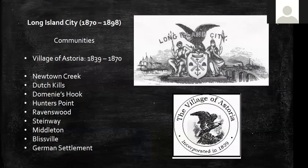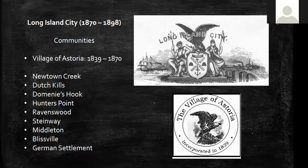Long Island City is comprised of several hamlets — New York has an interesting system of hamlets, towns, and villages. Long Island City includes the Village of Astoria from 1839 to 1870, and other hamlets: Newtown Creek, Dutch Kills, Dominique's Hook, Hunter's Point, Ravenswood, Steinway, Middleton, Blissville, and the German Settlement. The boundaries between each neighborhood are somewhat vague — when does Astoria start and Long Island City stop? The upper corner shows the coat of arms of Long Island City, which speaks to the city's various elements.